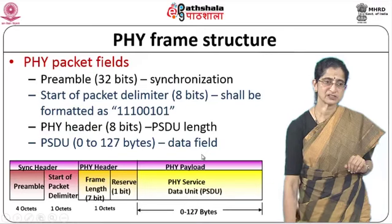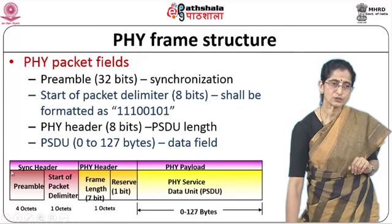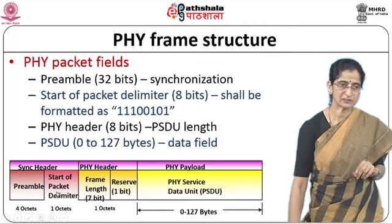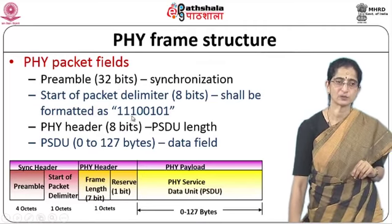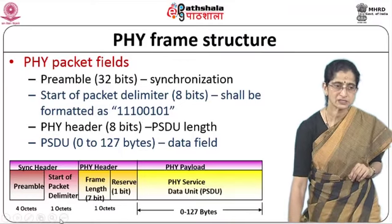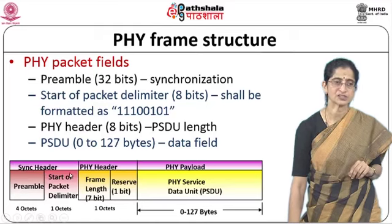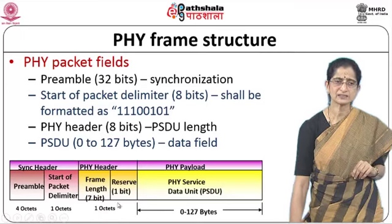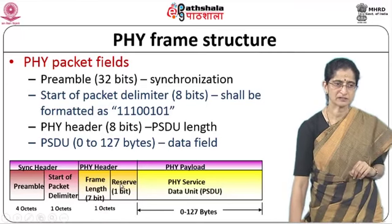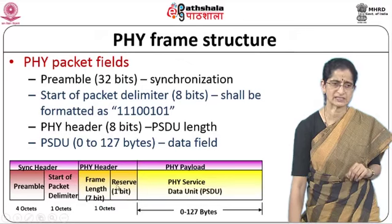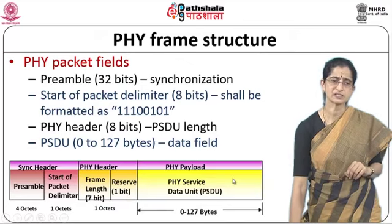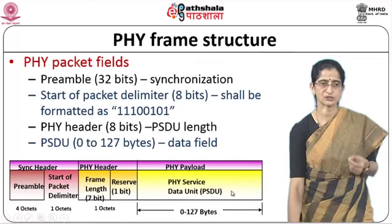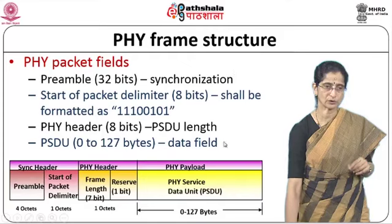The 802.15.4 physical layer also handles link quality indication for received packets, clear channel assessment for performing CSMA/CA — Carrier Sense Multiple Access with Collision Avoidance — channel frequency selection support, and data transmission and reception. The frame structure has a 32-bit preamble for synchronization, a start of packet delimiter with pattern 11100101, a physical layer header with 8 bits giving the PSDU length, and a physical service data unit varying from 0 to 127 bytes as the data field.